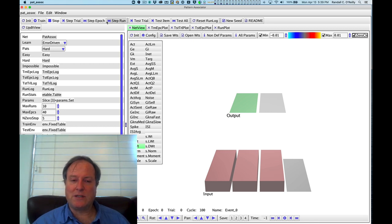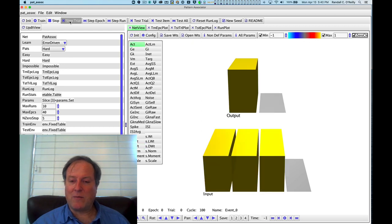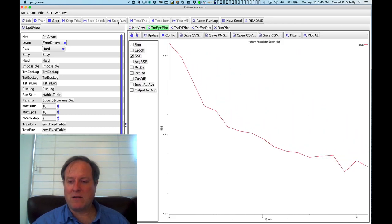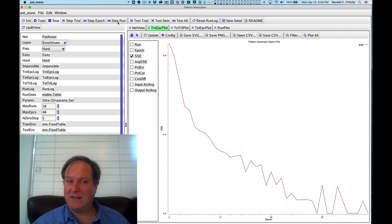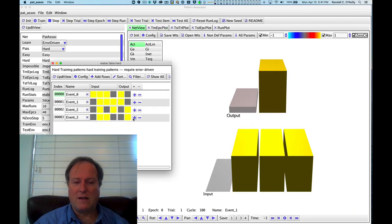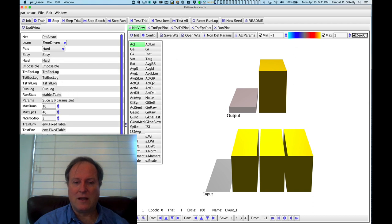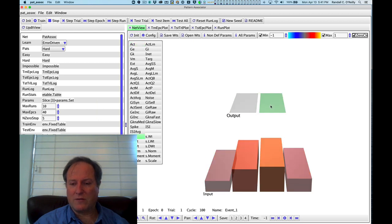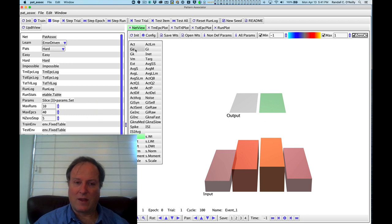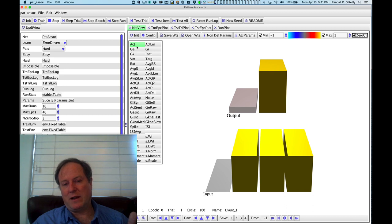So we just keep running that basic delta rule type of learning. Over time, we're doing this same hard problem that couldn't be solved before. Let's do a step run. Amazingly, the network can solve this problem. It has gotten the patterns correct and learned a pattern of synaptic connections capable of solving this problem. You can try to understand the exact pattern of weights, but basically for the first output unit, you need to learn about the two outside units, and for the second one, you learn about the two inside ones. Because the error signals are shaping these synaptic weights, it's essentially mathematically guaranteed to solve the problem. That's really the key point.